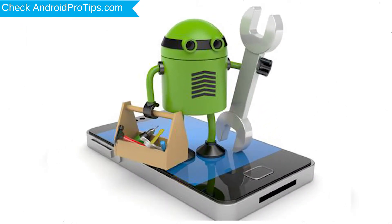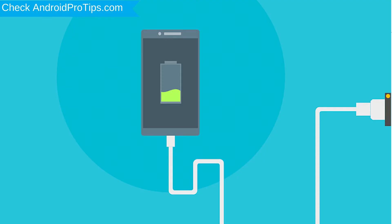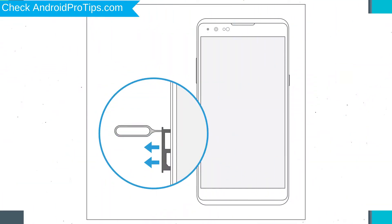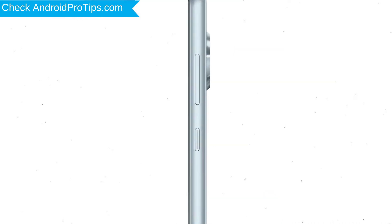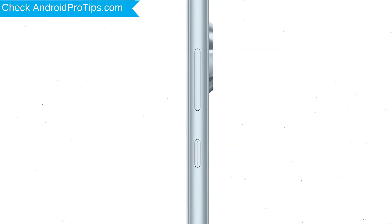Before resetting your mobile, your battery must be above 50%. Remove SD cards and SIMs. Backup your Android mobile data if possible, then power off your mobile by holding the power button.